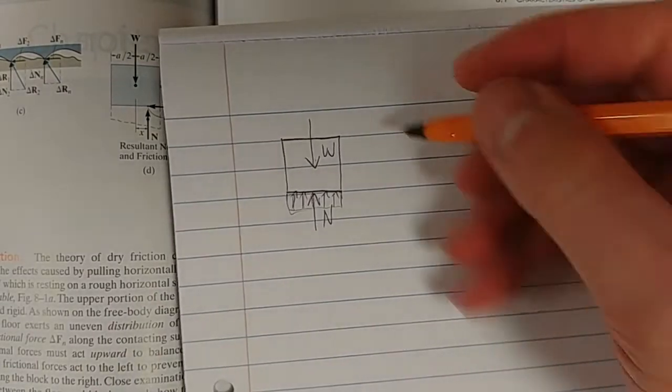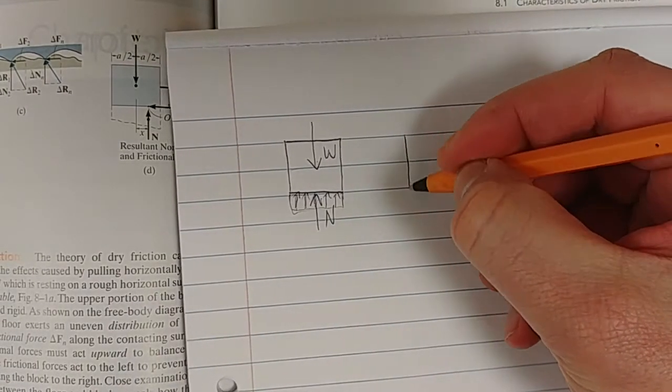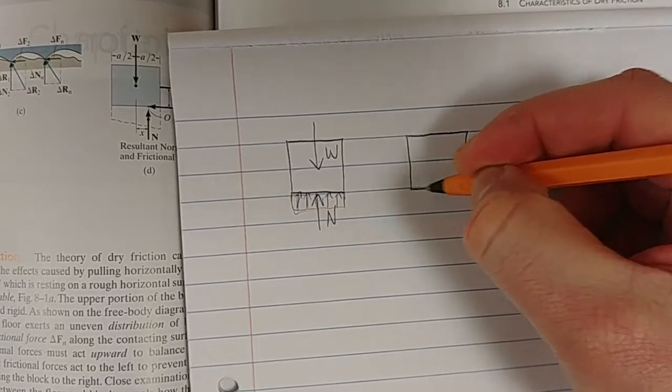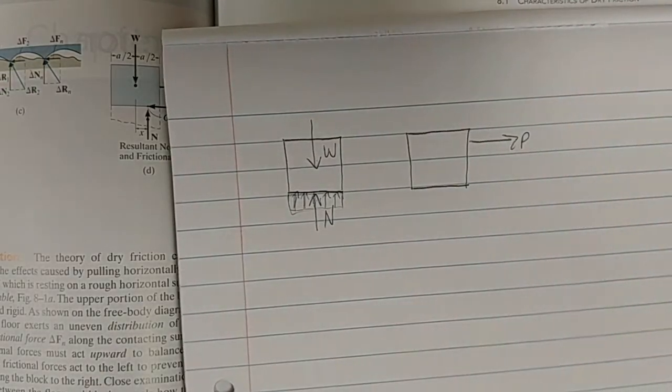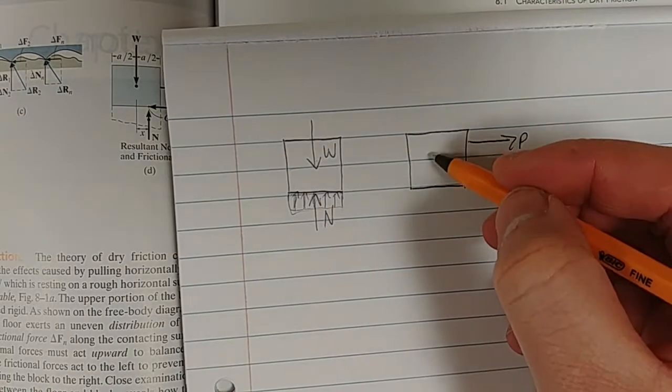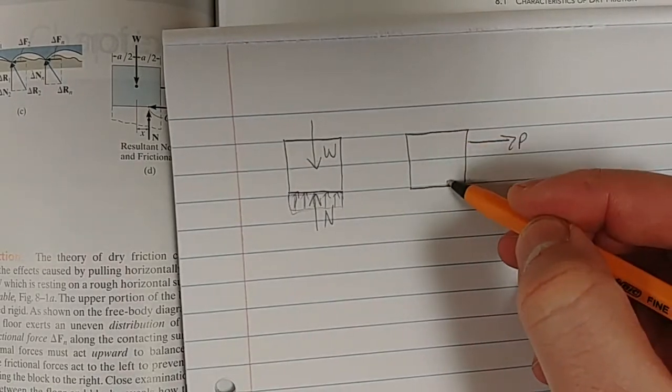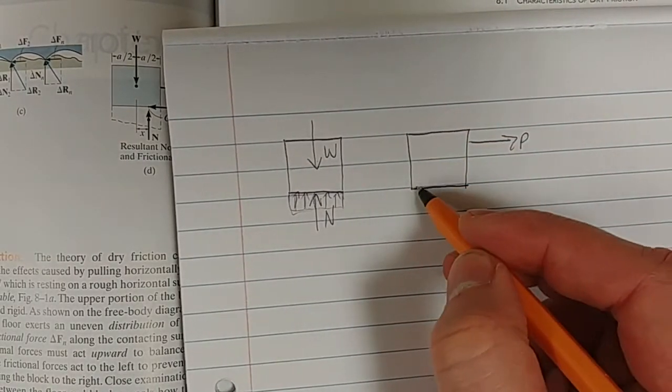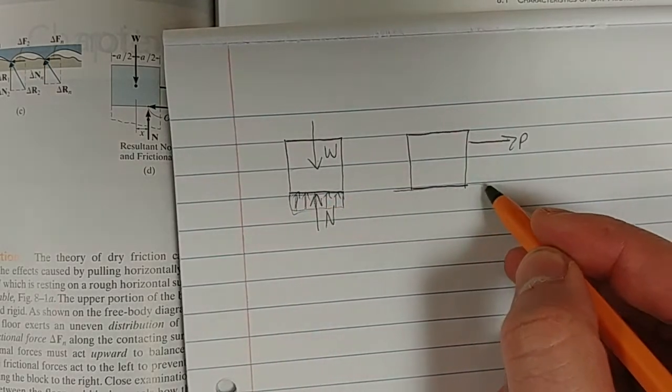Now, what happens is, when we begin to apply a force, a horizontal force P, that force wants to now move this box, or this crate, or whatever you want to call it, wants to move it relative to the surface.